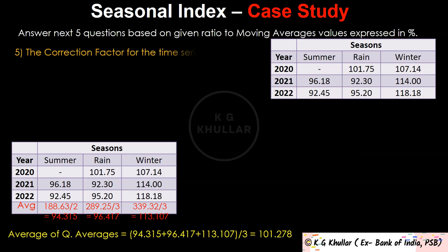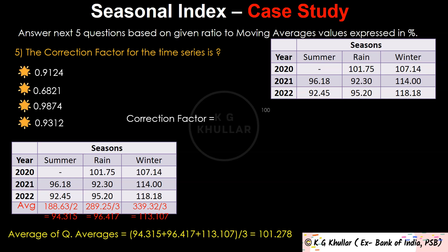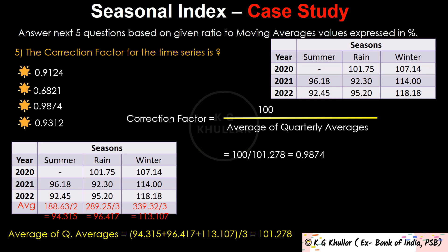The last question of our case study is: the correction factor for the time series. The correction factor is simply calculated as 100 divided by average of quarterly averages. Since all these are percentages, in an ideal world the total must be 300. A correction factor is needed to make adjustments so that the total comes out to be 300 — this is basically the use of the correction factor, to rectify the error. We already found the average of quarterly averages as 101.278, so the correction factor is 100 divided by 101.278, which equals 0.9874. The correct option is option C.